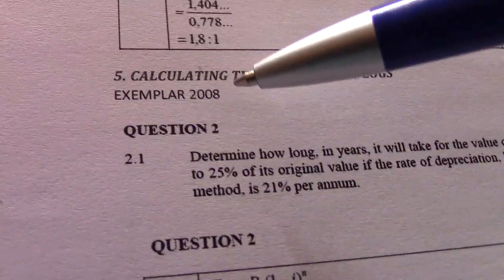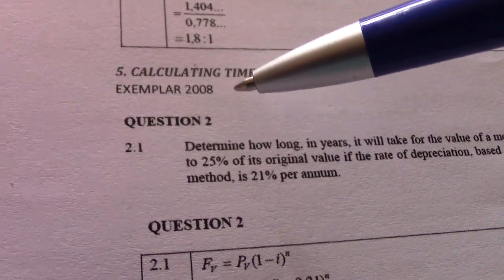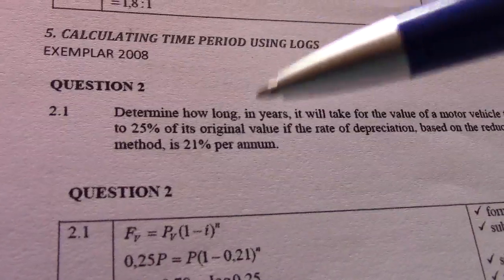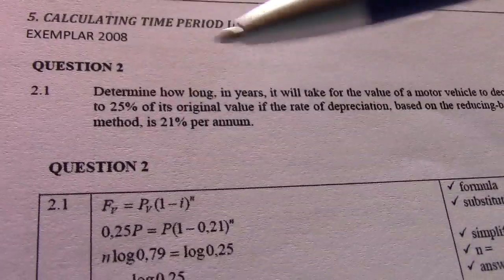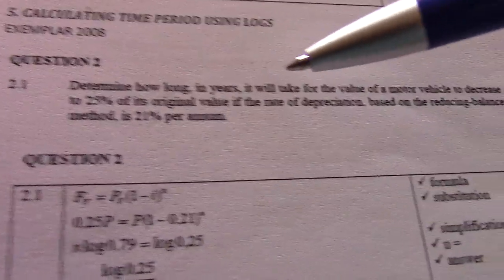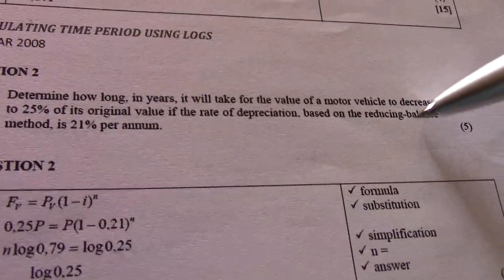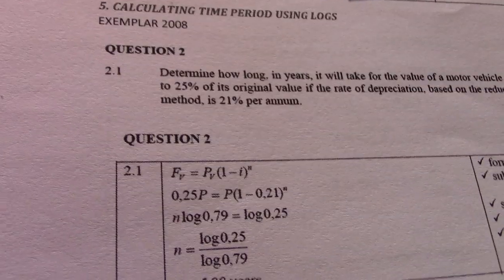If I look at example 2008, which is about 11 years ago, I think you started grade 1. Question 2: Determine how long in years it will take for the value of a motor vehicle to decrease to 25% of its original value if the rate of depreciation, base keyword, reducing balance method, is 21% per annum.